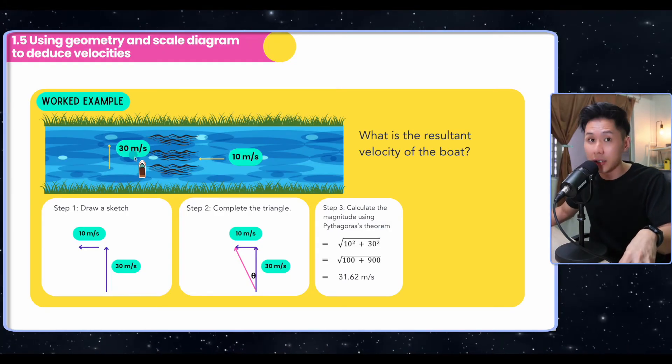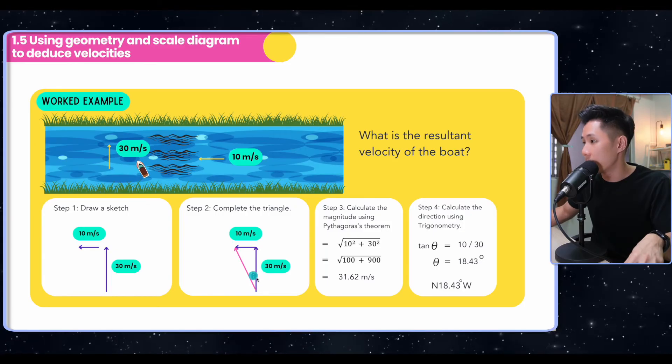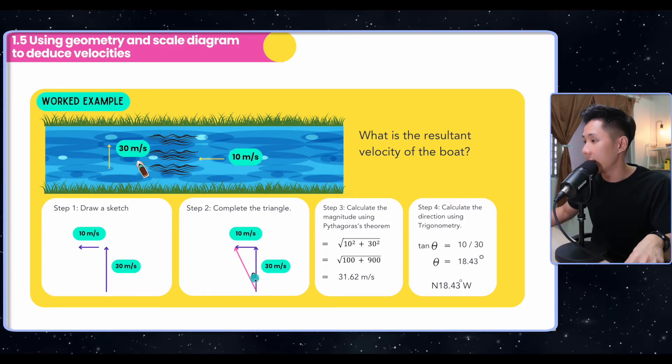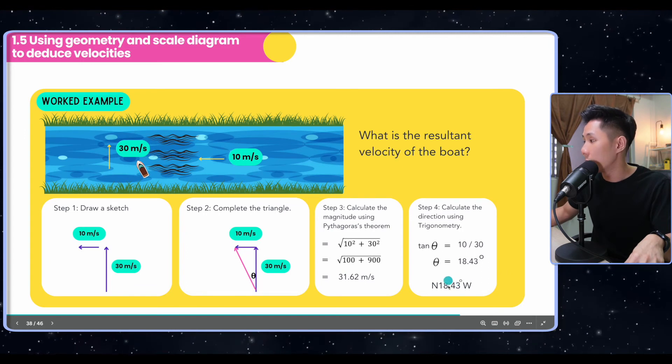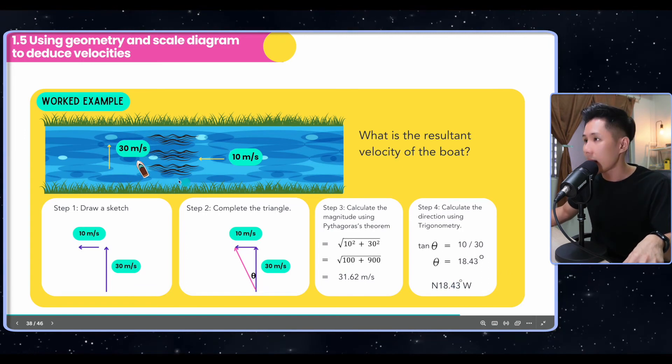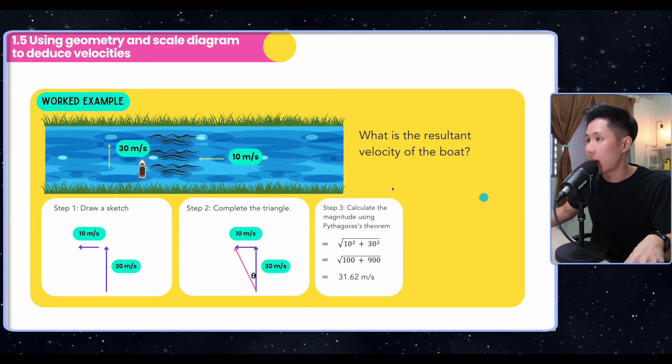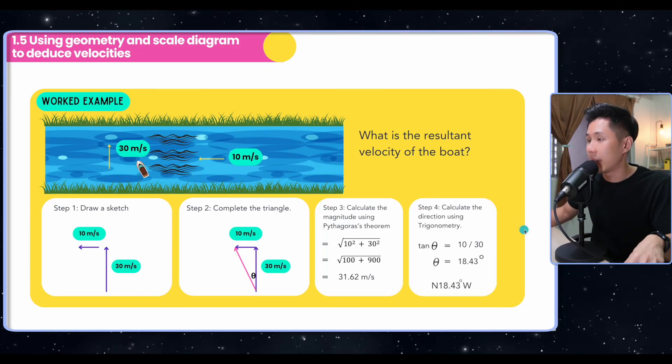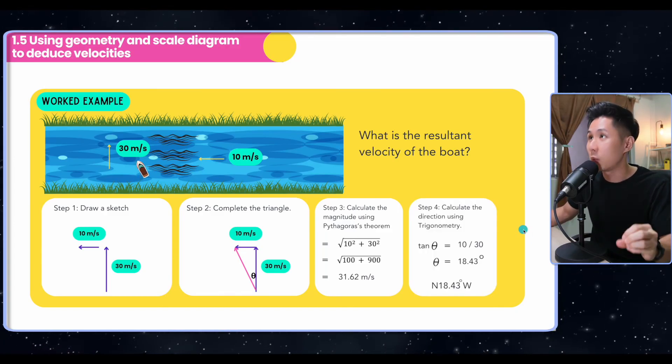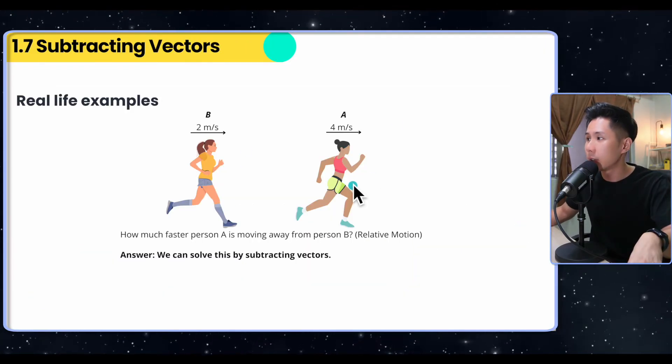That's how we calculate the resulting velocity. In which direction will the boat be traveling? That's when you can use trigonometry to find out the angle. You will be able to figure out that the boat is moving 18.43 degrees from north to the west. That's why you can see the boat has changed direction from this, because of the flow of the river. Then it'll move here. That's how we can use geometry and scale diagrams to deduce velocities.